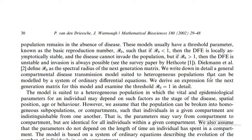We derive an expression for the next generation matrix for this model and examine the threshold R₀=1 in detail — what happens when R₀ is less than one and what happens when it is greater than one. The model is suited to a heterogeneous population in which the vital and epidemiological parameters for an individual may depend on factors such as the stage of the disease, spatial position, age, or behavior.